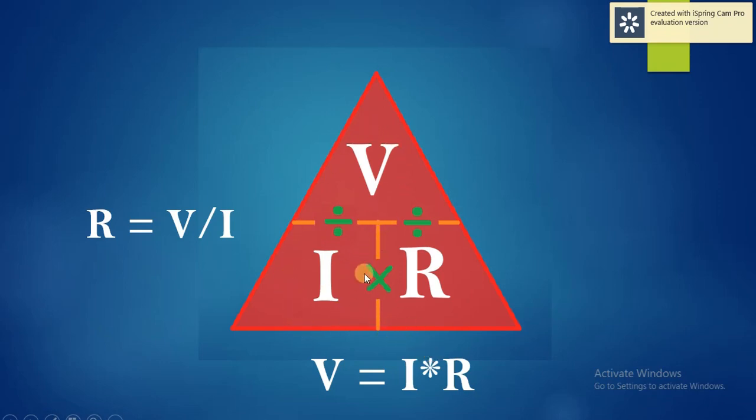Similarly, to calculate current in amperes, we have to cover I. Therefore the remaining terms are V divided by R and the equation becomes I equals V divided by R.